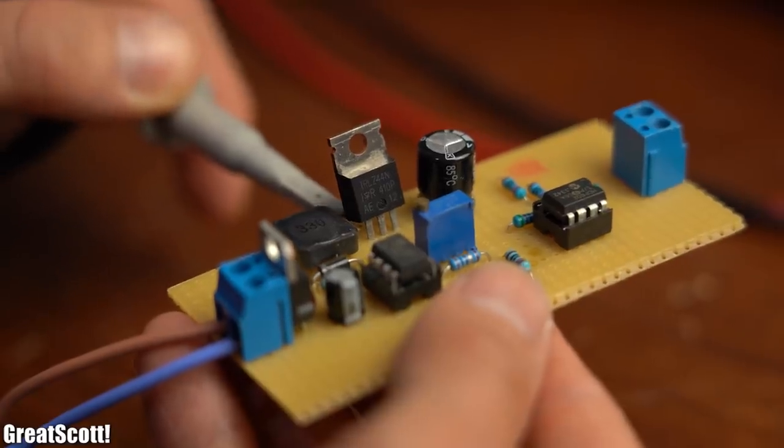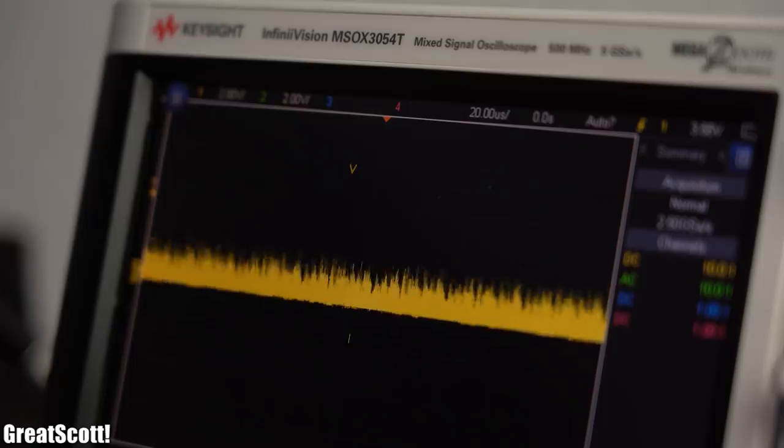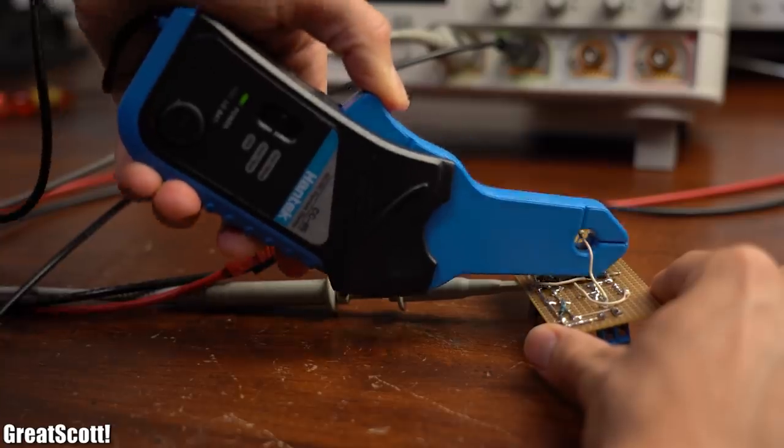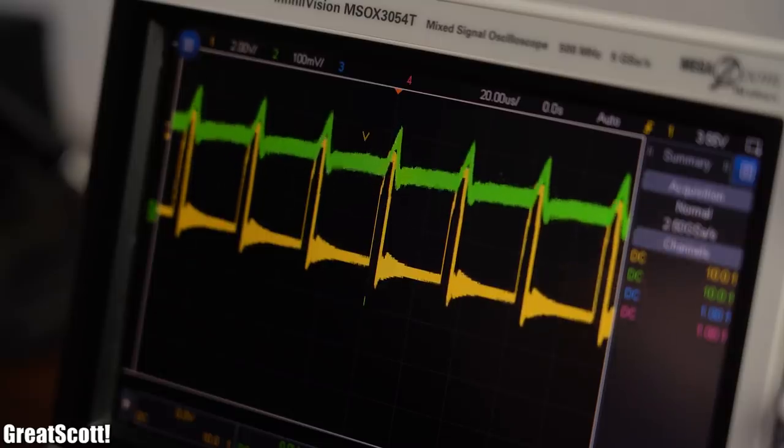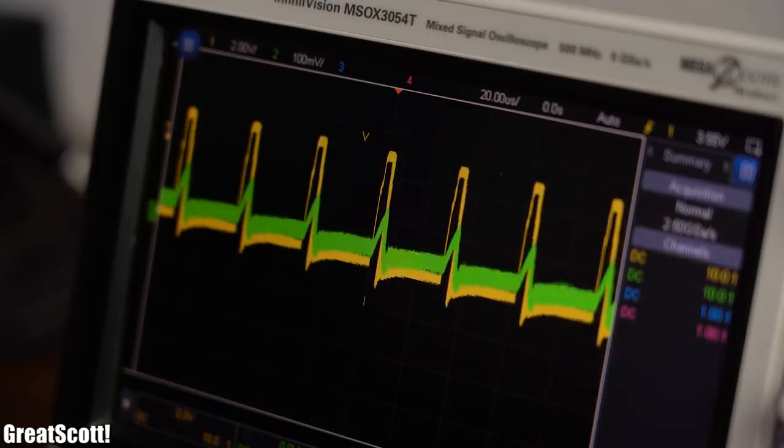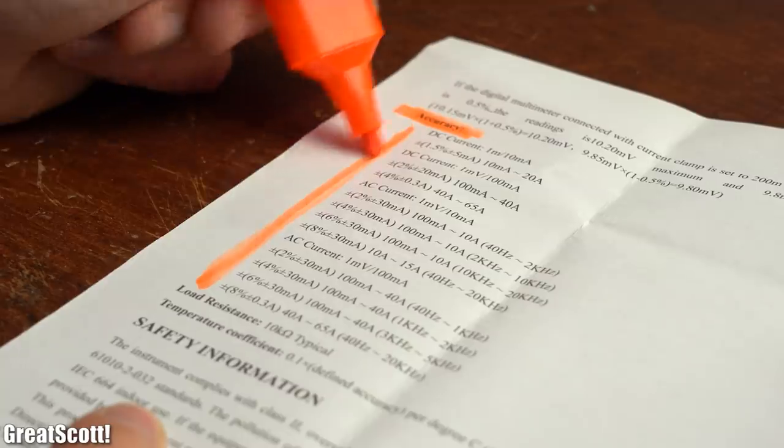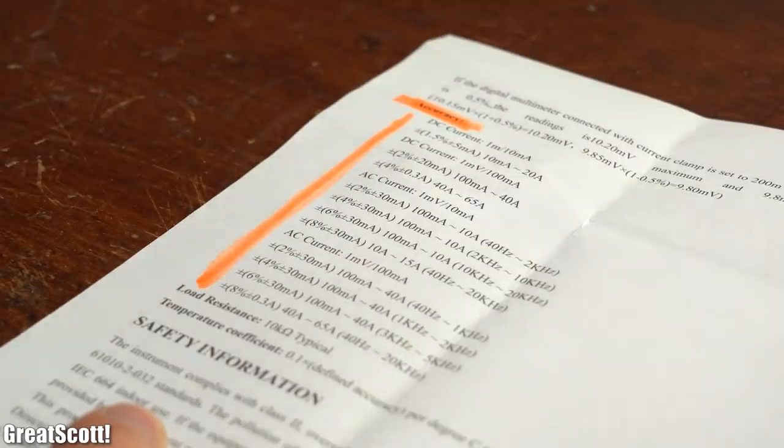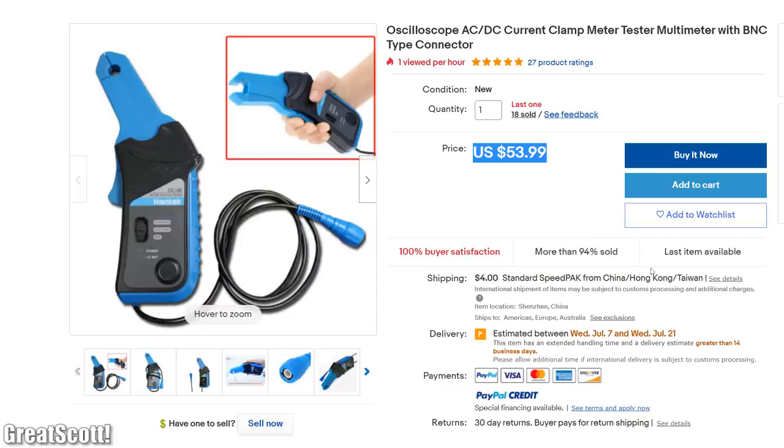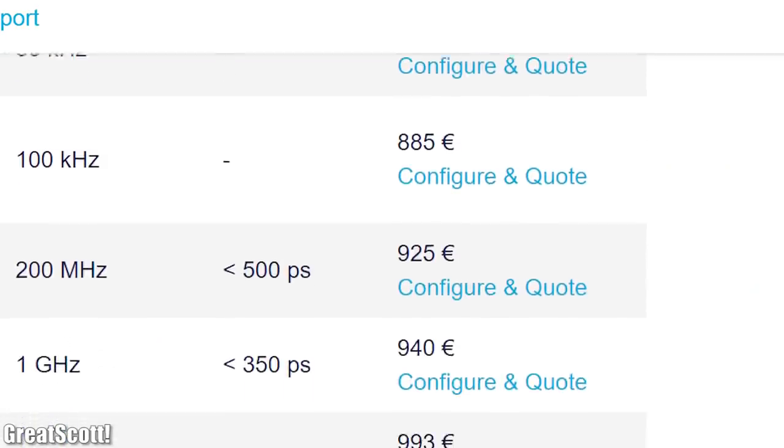Instead we need an oscilloscope with a normal probe to check the voltages and, like I said before, a current clamp in order to show the current waveforms. Now I was quite happy with this current clamp model since it is acceptably precise and its price is also reasonable when you compare it to other models on the market.